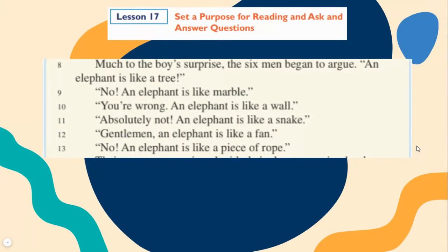Much to the boy's surprise, the sixth man began to argue. An elephant is like a tree. No, an elephant is like marble. You're wrong. An elephant is like a wall. Absolutely not. An elephant is like a snake. Gentleman, an elephant is like a fan. No, an elephant is like a piece of rope.